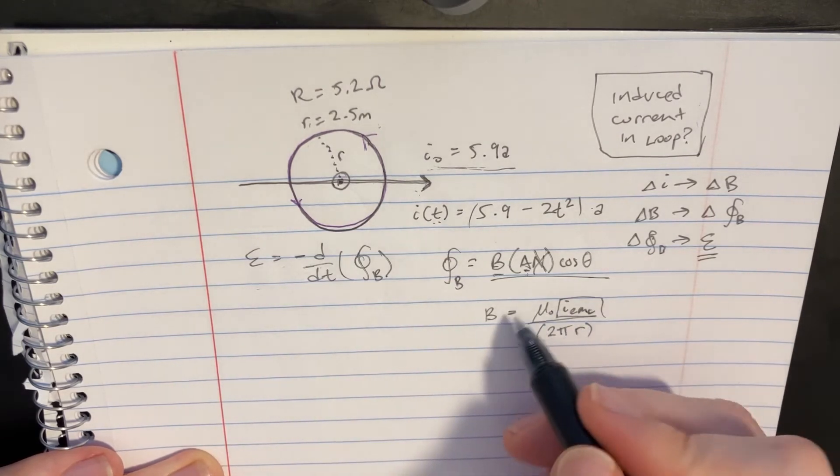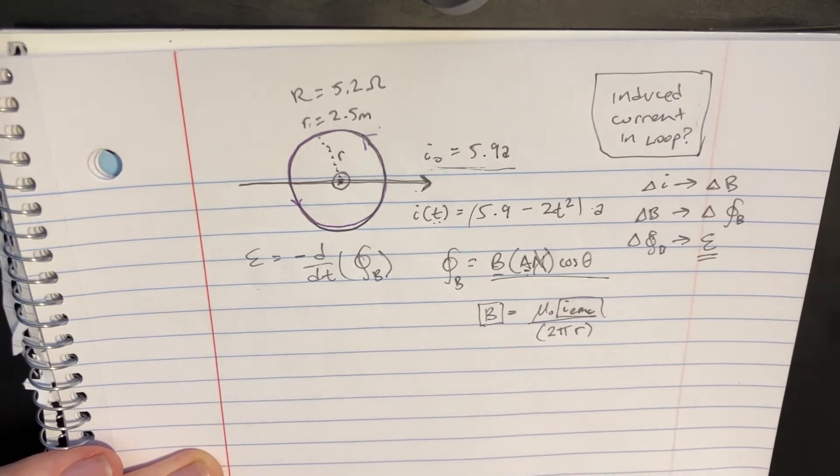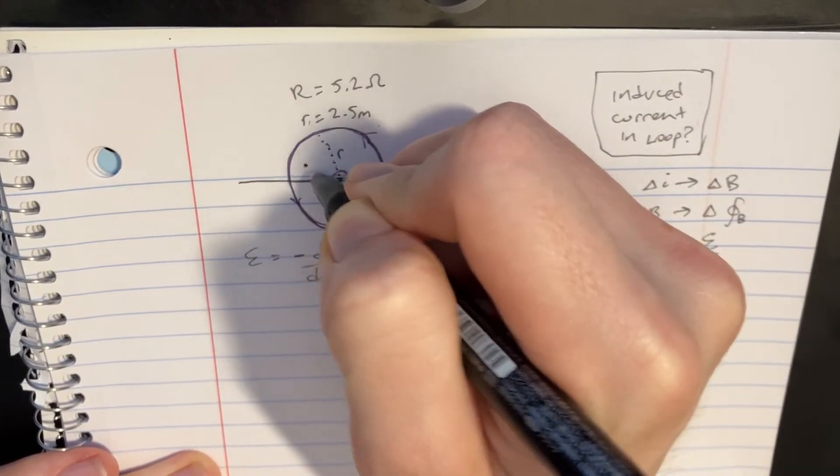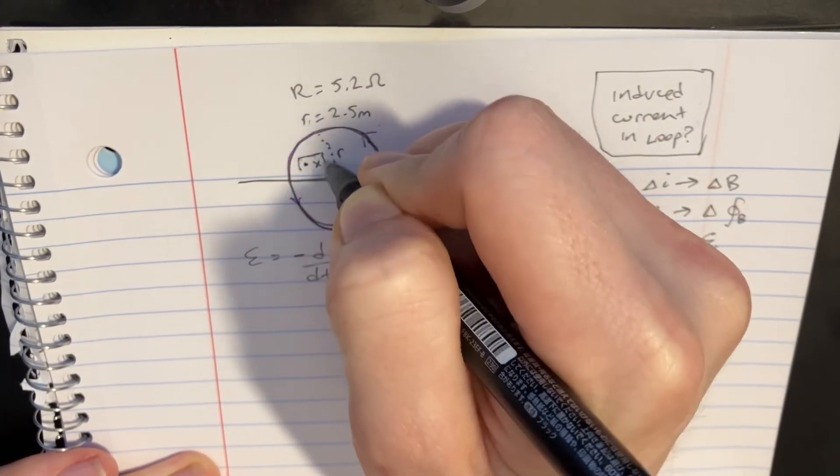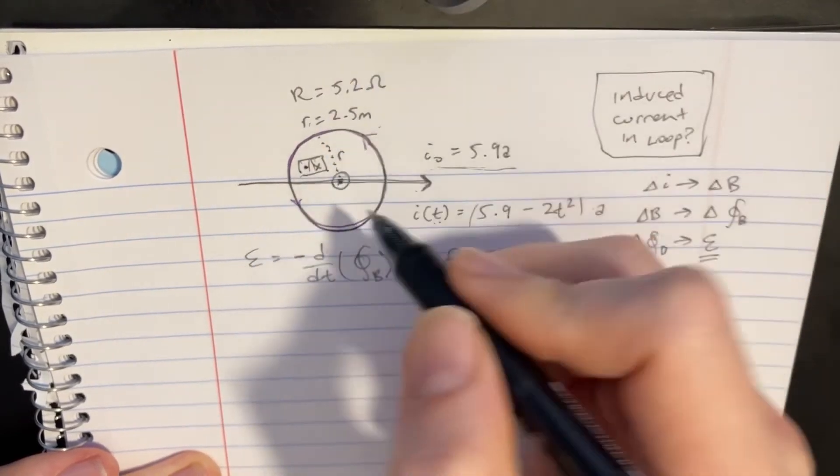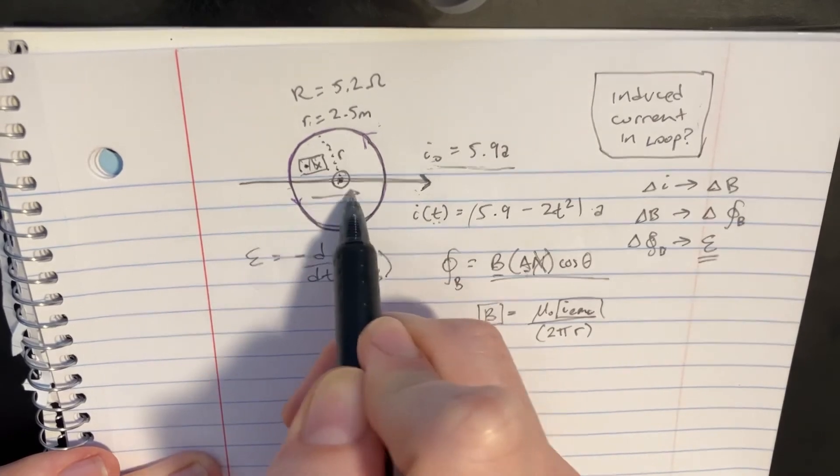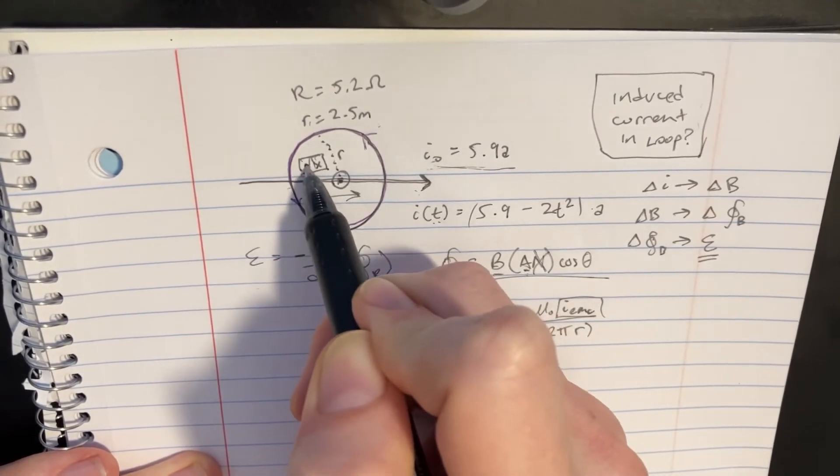The I's for this particular, the Amperian loops, the I's, the currents need to either be going into or out of the page in order for it to count for anything. But the problem is this current is going in this direction.